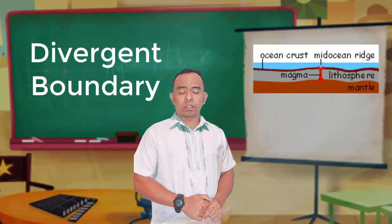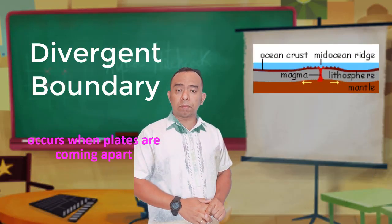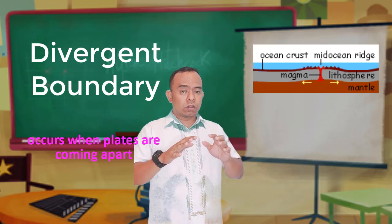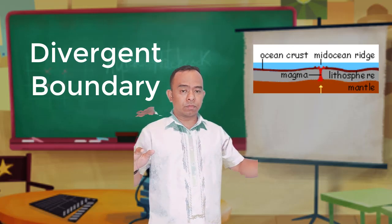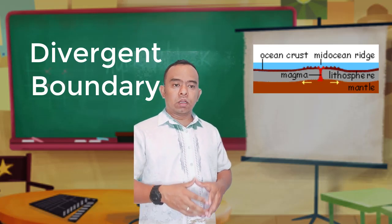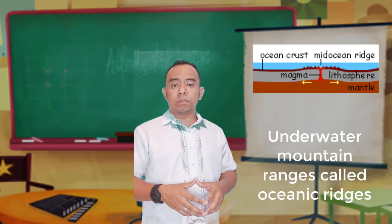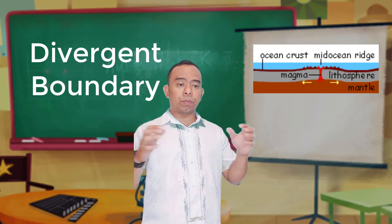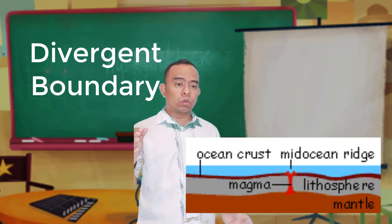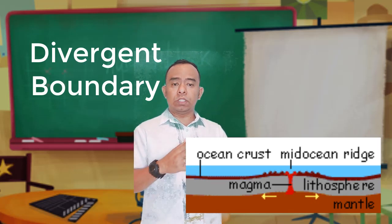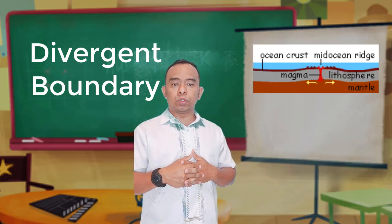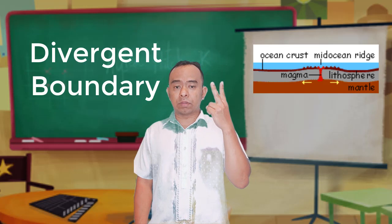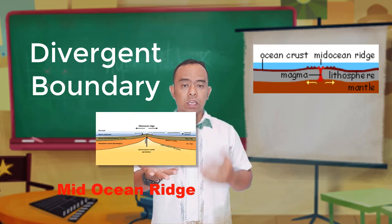Divergent boundaries are plate boundaries where the two plates are moving apart from each other. Most divergent boundaries are situated along underwater mountain ranges called oceanic ridges. As the plates separate, new materials from the mantle ooze up to fill the gap, and these materials slowly cool to produce new ocean floor. There are two types of divergent boundaries: the mid-ocean ridge and the rift valley.